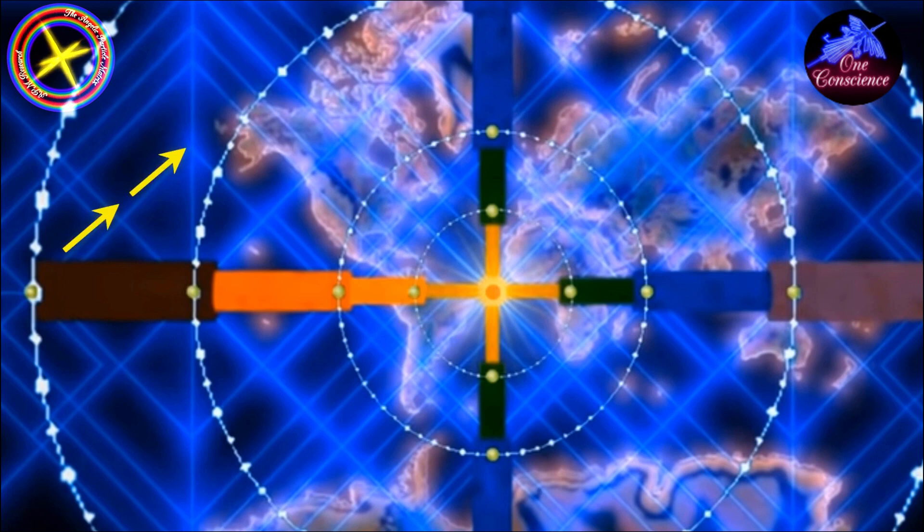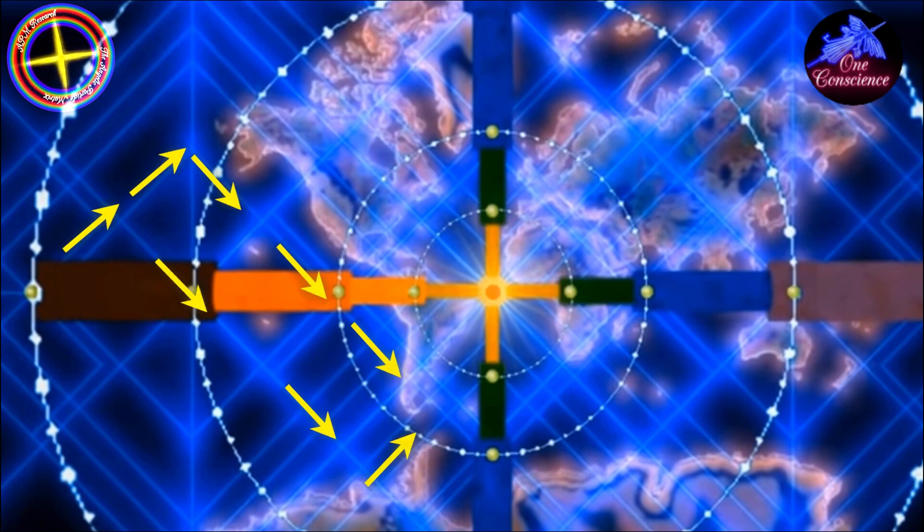This first one hit at Alaska and it then traveled down the ley lines to hit at the South Sandwich Islands. As we can see this very well follows as I have spoken about in many past presentations.